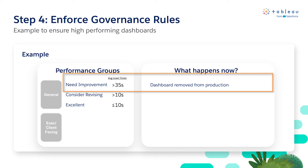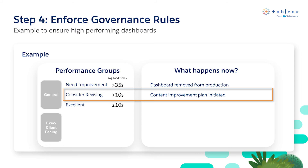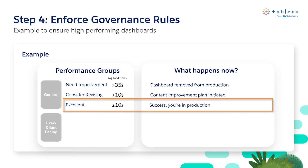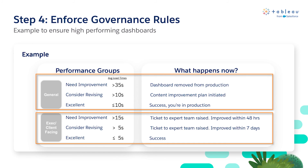Next, set the follow-up actions for each group. In our example, dashboards in Needs Improvement will be removed from production until design is improved. Dashboards in Consider Revising will activate the content improvement process set in Step 2 of this framework, and dashboards in Excellent are clear to stay. These groups will differ depending on the audience, so set different governance guidelines to reflect your different audiences.